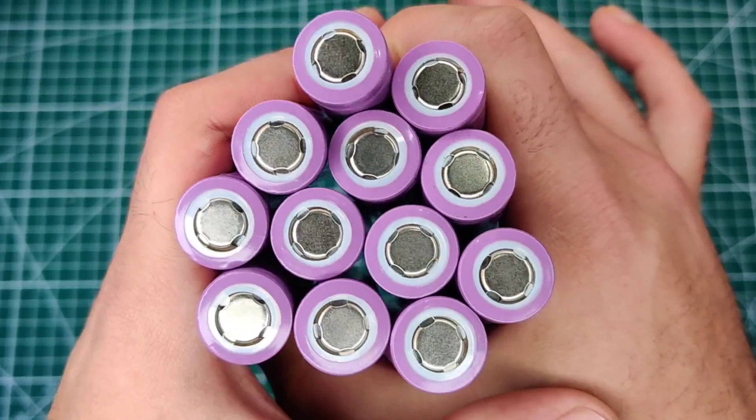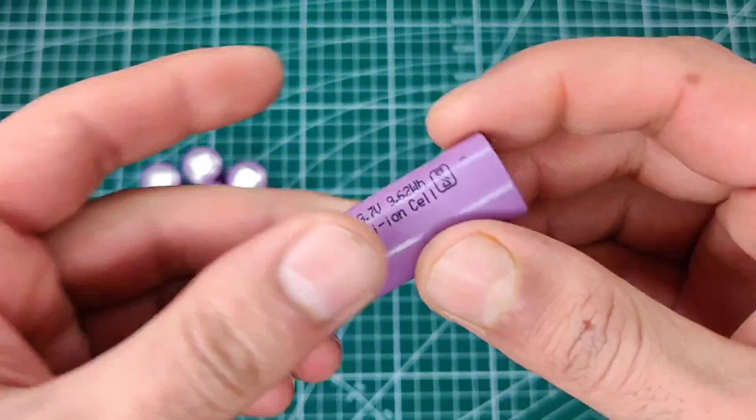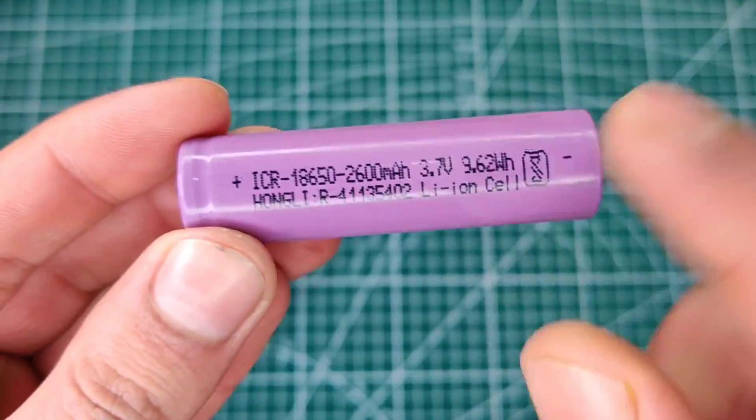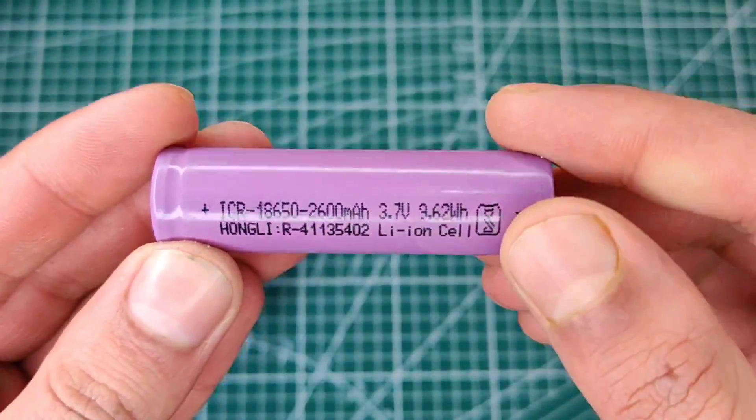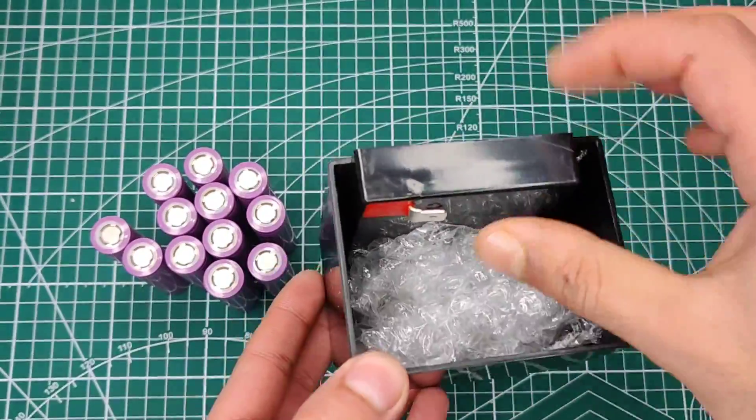Hi guys, today I will show you how to make a 12 volt lithium battery pack using these 18650 cells. Each cell is 2600 mAh. Also, you need this battery housing, it will protect the cells from external damages. You can find the purchasing link in the video description.